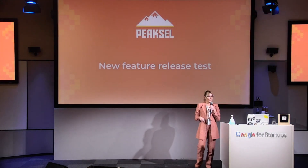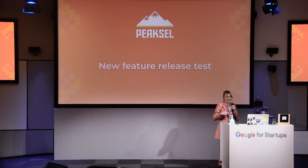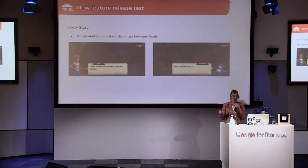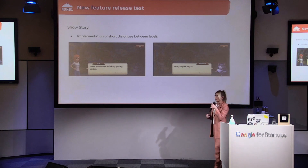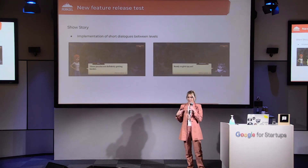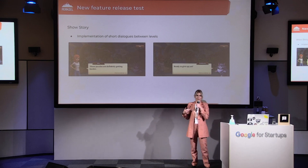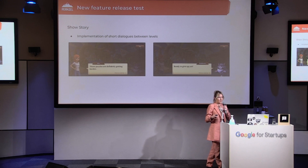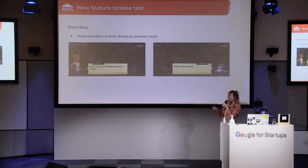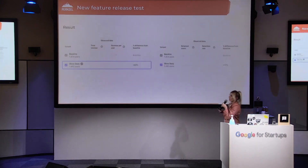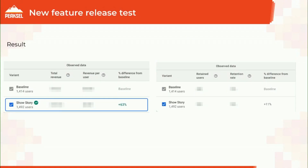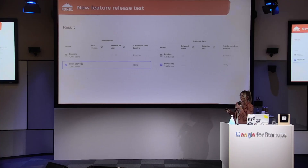Next, we have a new feature release test. The idea behind this test was to engage users more. Previously, we didn't have any story, and we came up with the idea to implement short dialogues between levels. We tested the version without any story against the version with those dialogues. When we showed the story to users, revenue was better by 63% and retention was also better by 11%. We had no doubt, and we implemented that version for all users.